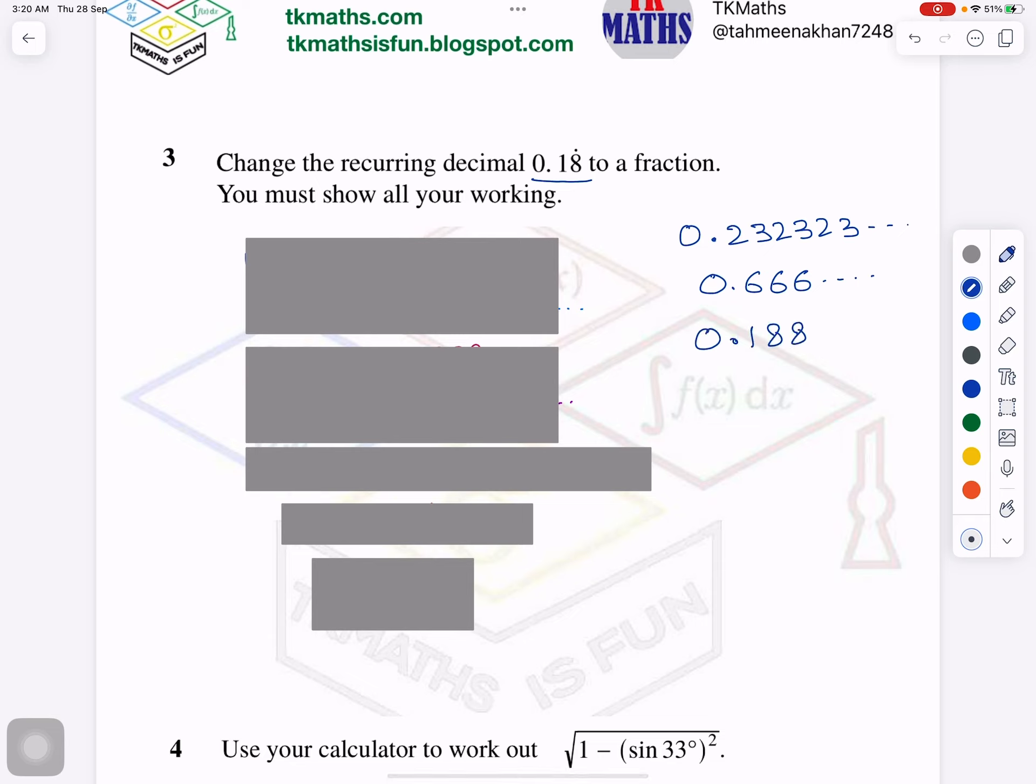It means the number is something like this. So whenever you are changing such recurring decimals into fraction, you know what is the key behind it? That you have to change this number in a manner so that after decimal you have same digits. Right now after decimal I don't have. And before decimal you have an integer. This is the technique.